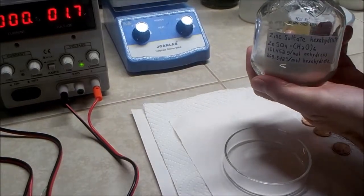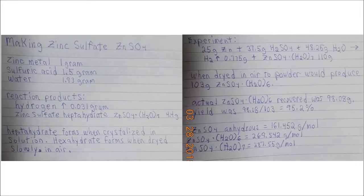If you don't have zinc sulfate, you can easily make some using zinc metal and sulfuric acid. Here is a page from my chemistry notebook that may be of help if you are going to try and make your own zinc sulfate.